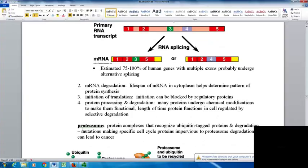We can regulate through mRNA degradation. How long the lifespan of the mRNA in the cytoplasm is helps determine the pattern of protein synthesis—how much you make based on how long you keep the instructions around. Initiation of translation can be blocked with regulatory proteins. Protein processing and degradation involves several proteins being chemically modified to make them functional. The length of time the protein functions in the cell can be regulated by selective degradation.